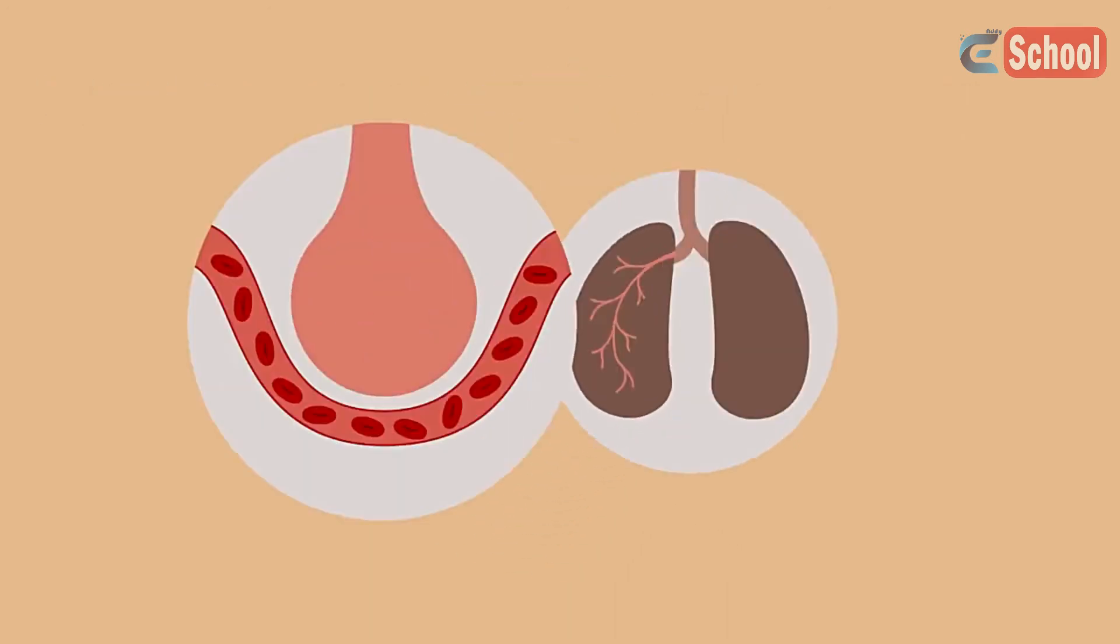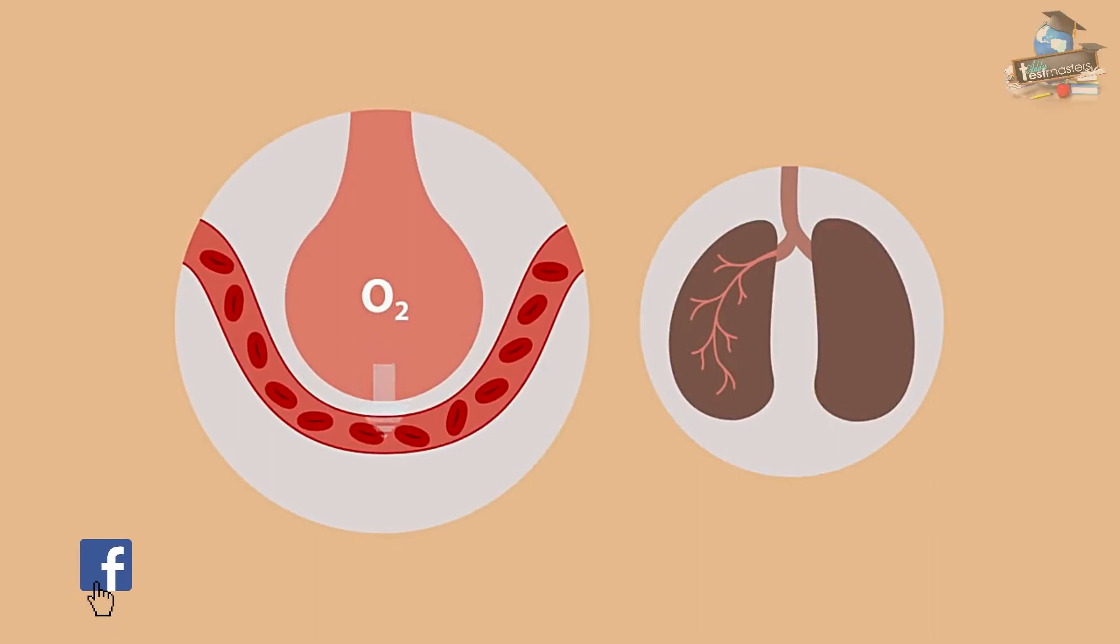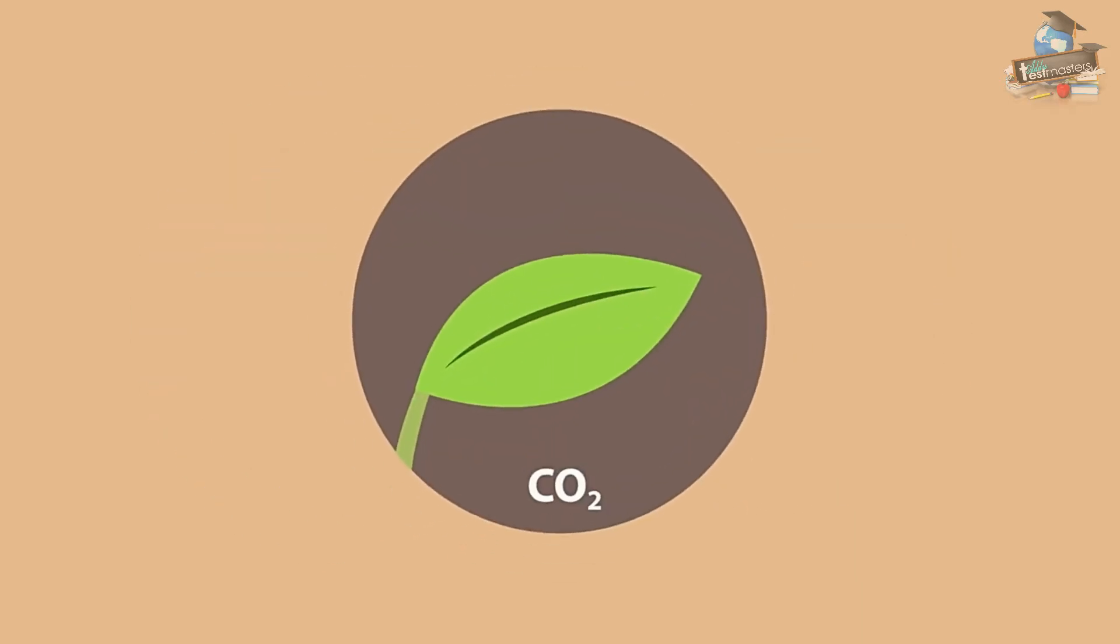Gas exchange in the lungs, so oxygen moving from the alveoli into the blood and carbon dioxide from the blood into the alveoli, are both great examples of diffusion. Carbon dioxide moving from the air into the leaves of plants also moves by diffusion, but it doesn't have to be a gas.